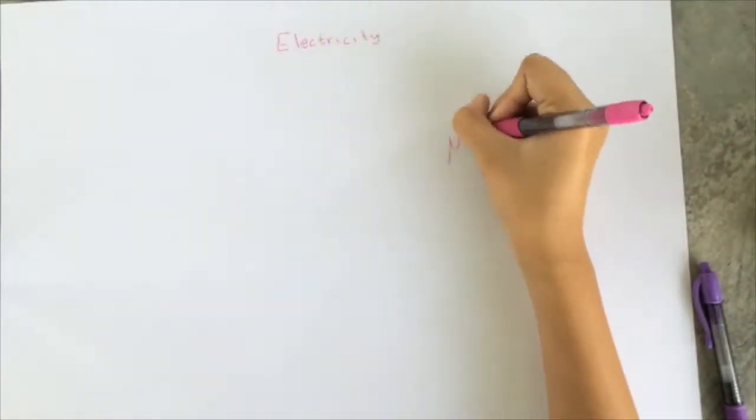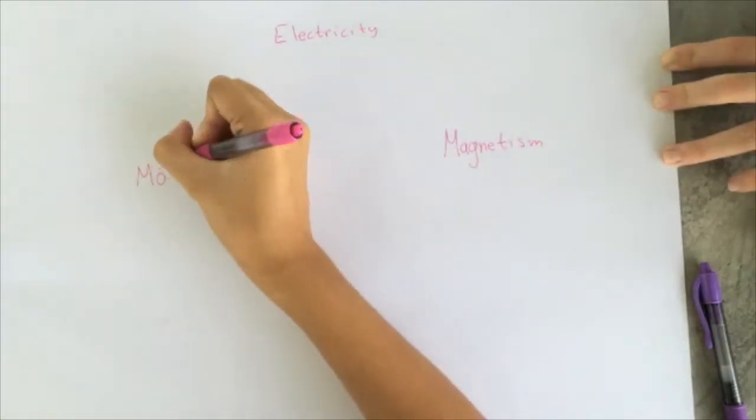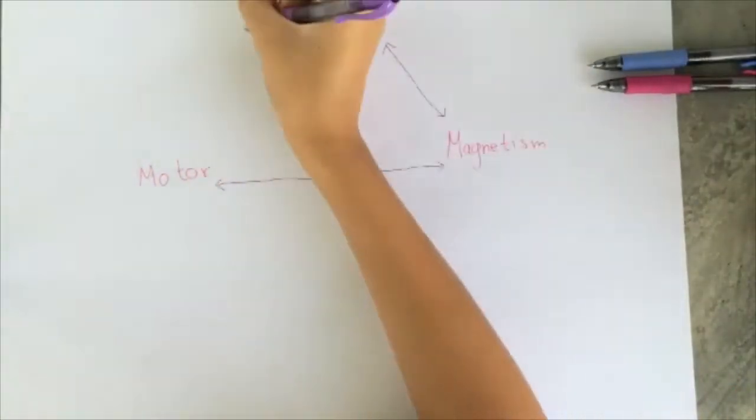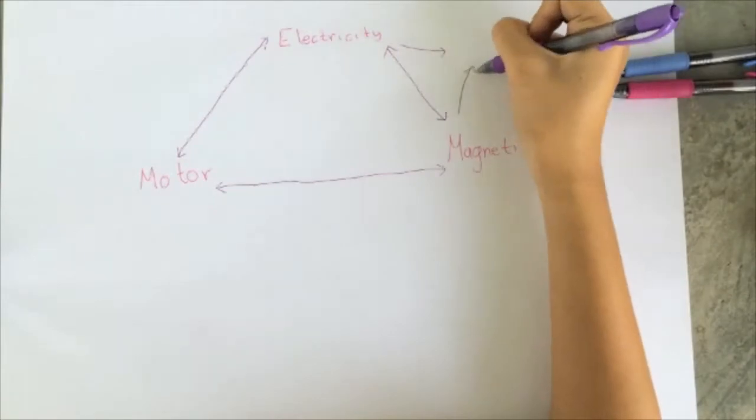Here is a diagram that explains electricity and magnetism. It shows how they are all related.